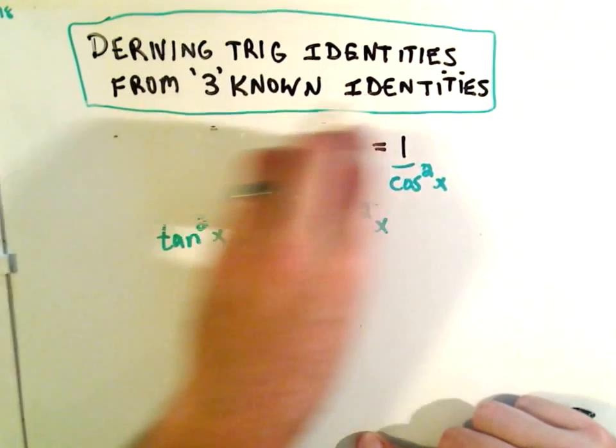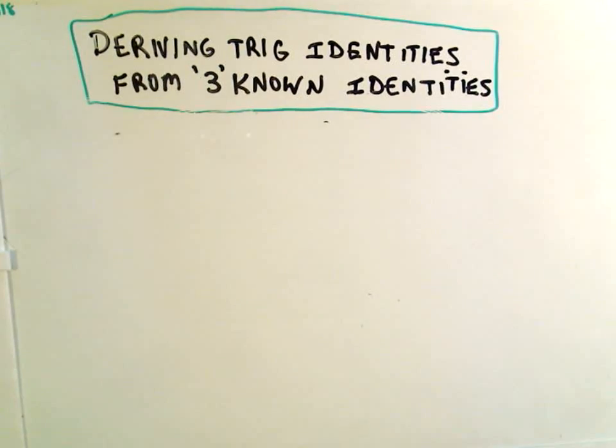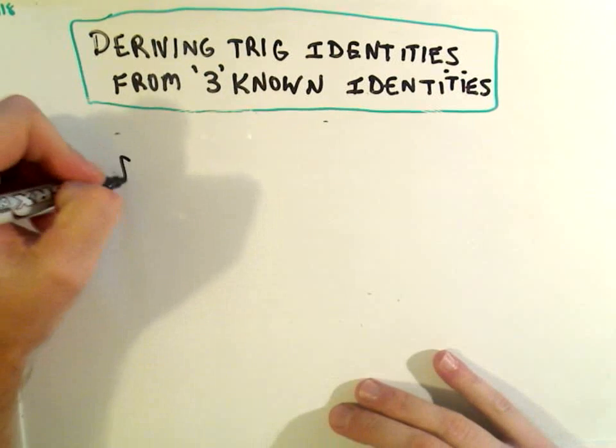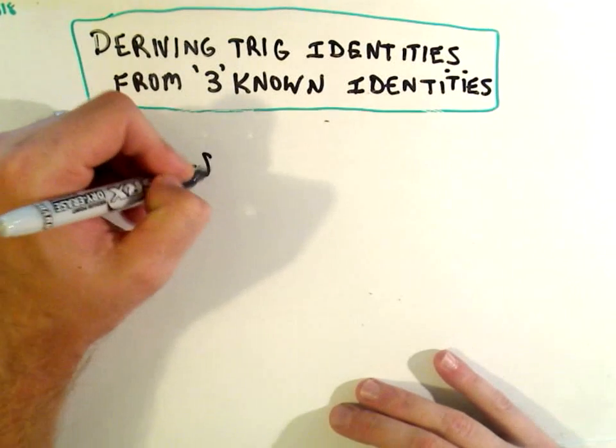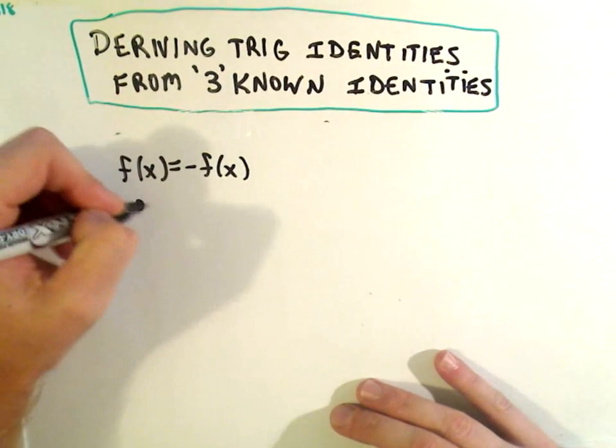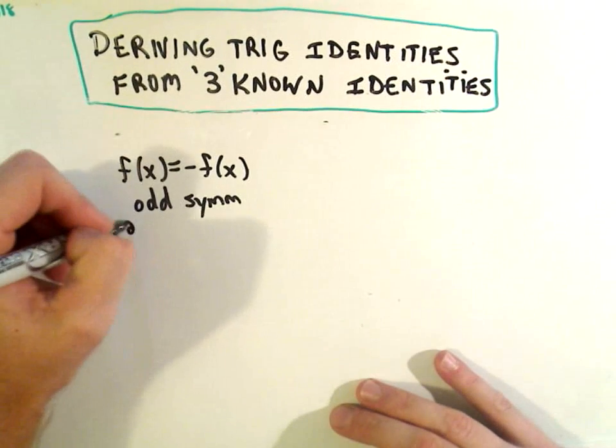A couple others—if you remember the definition of odd and even. So remember we say if a function satisfies f of negative x equals negative f of x, we say this is an odd function, and it turns out to be symmetric about the origin.